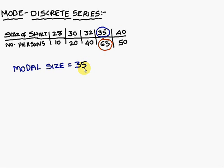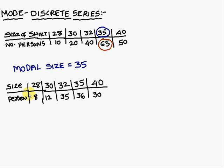That is the way we have to find out the MODE of the discrete series problem. Suppose let us consider this problem.